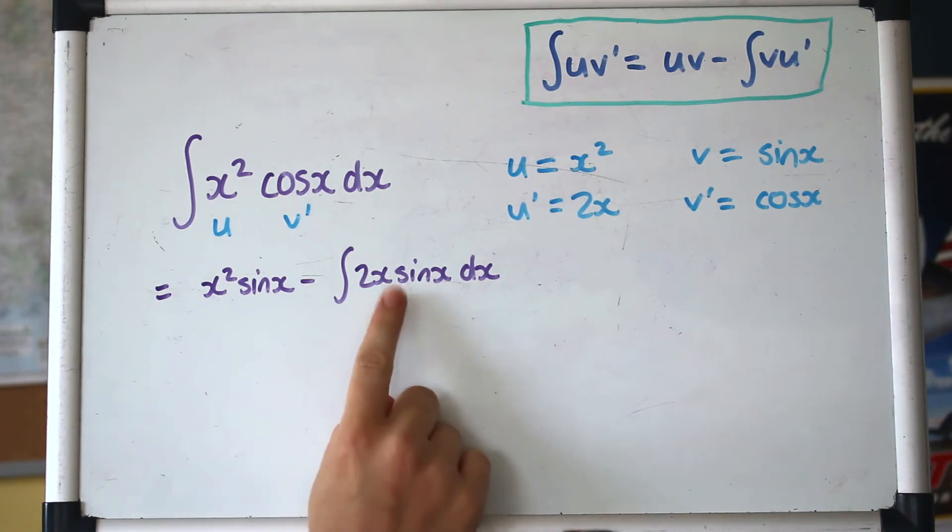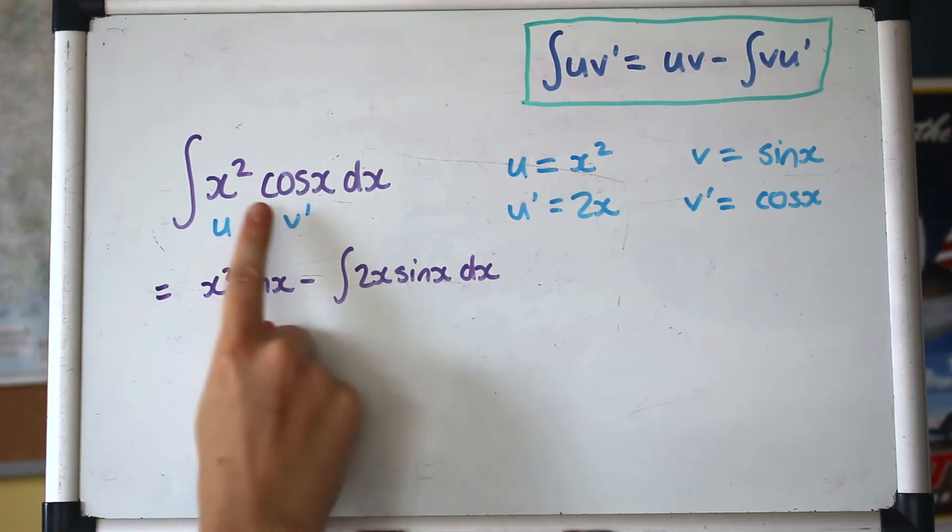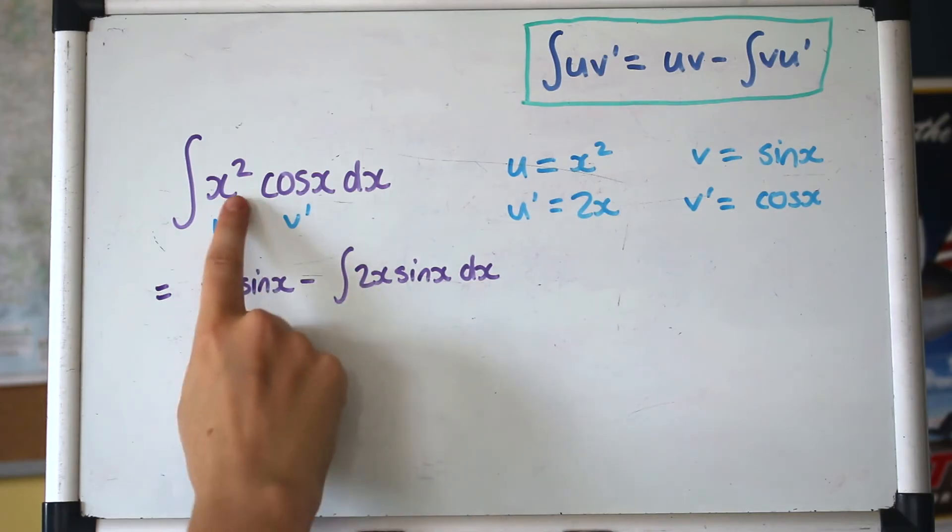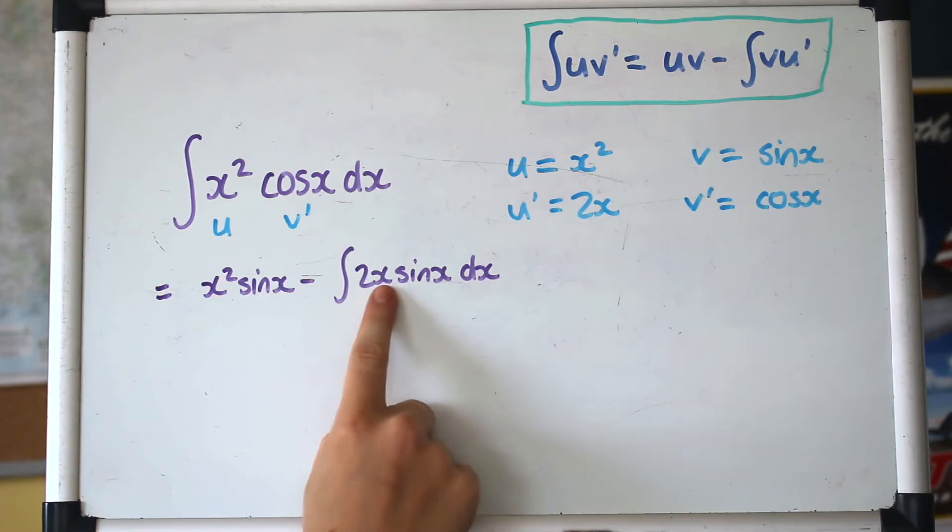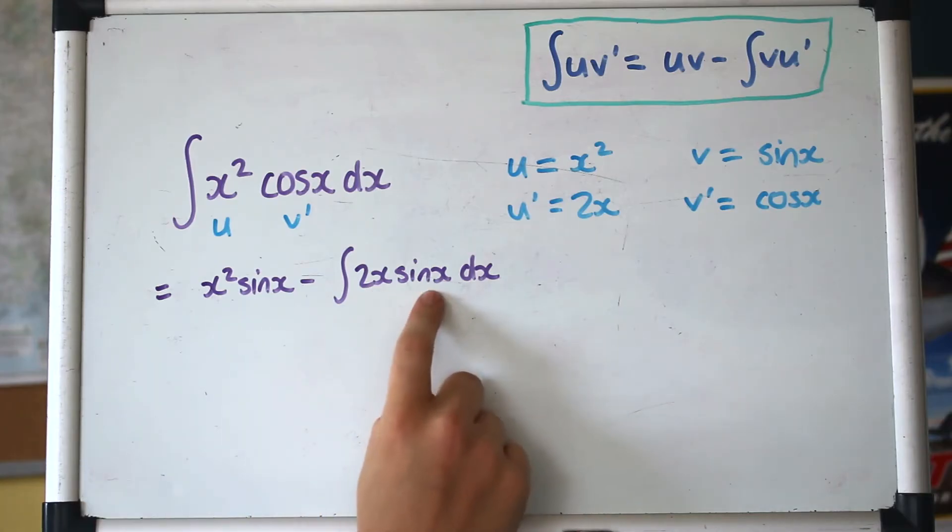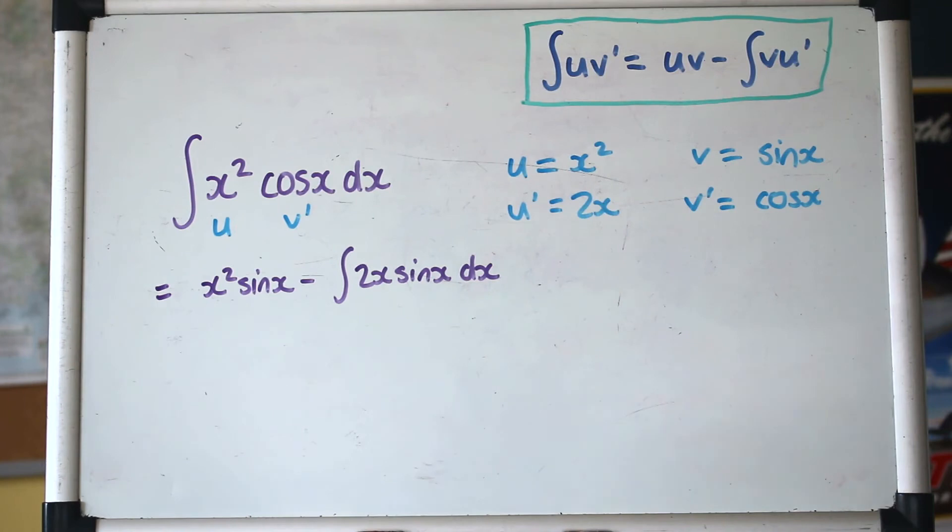Notice that this integral here, it looks easier to integrate than this did, but we're still not quite in a position we can integrate it because we've still got an x. So that one we had x squared. This one we've got x. So we're a step closer. What we really want is just a number times sine x to be able to integrate that. So what we're going to do is use integration by parts again. We're going to apply it again to this part here. Fun times.